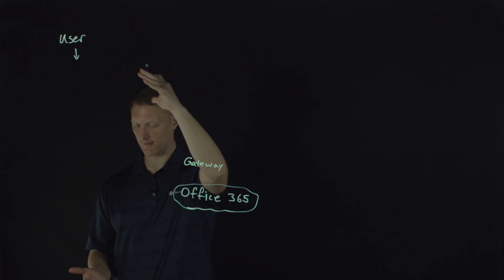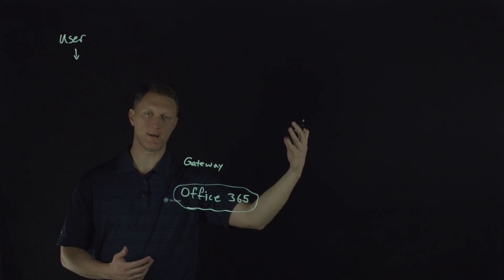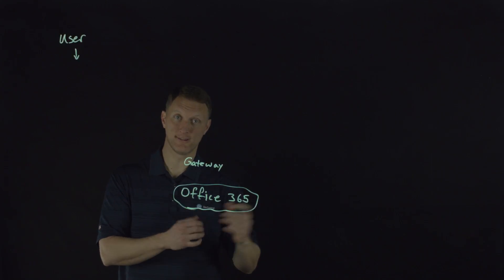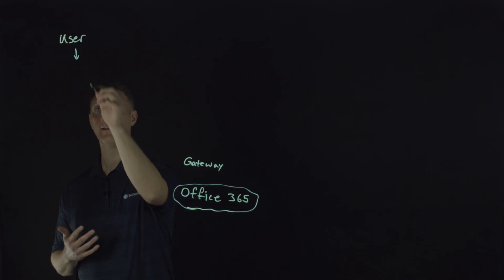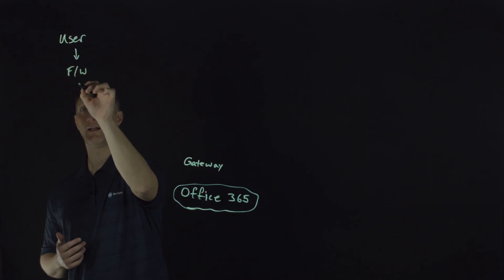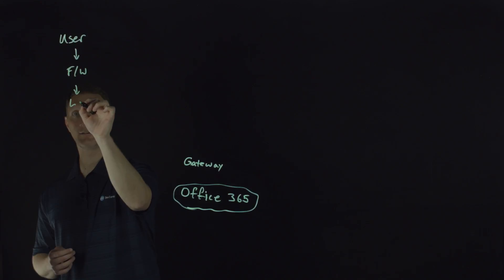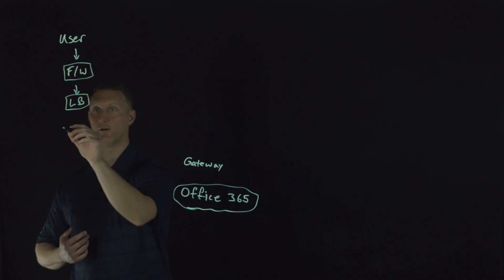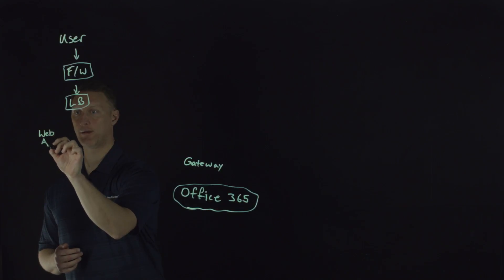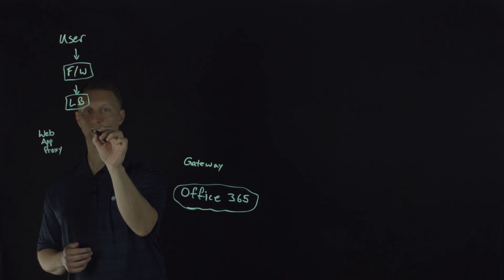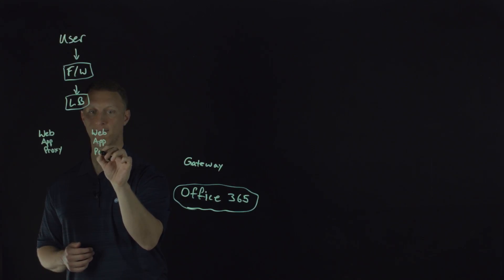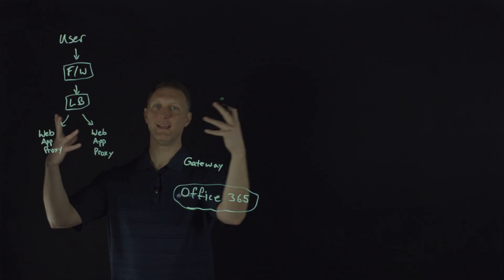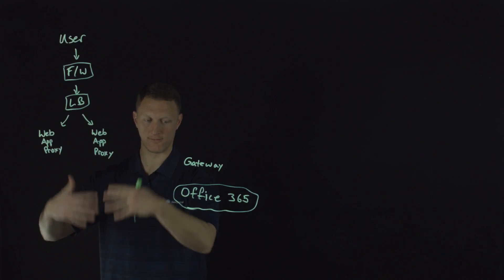Here's how the architecture is built. You can look at the Microsoft documentation to see exactly how they recommend to do this. The user goes through an external firewall, and that is going to come into a load balancer — I'll put LB right here. So you have a firewall to a load balancer that then goes to what we're going to call a web app proxy. You're going to have a couple of those in case one goes down. That's why the load balancer is important — it needs to be able to load balance to these web application proxies.